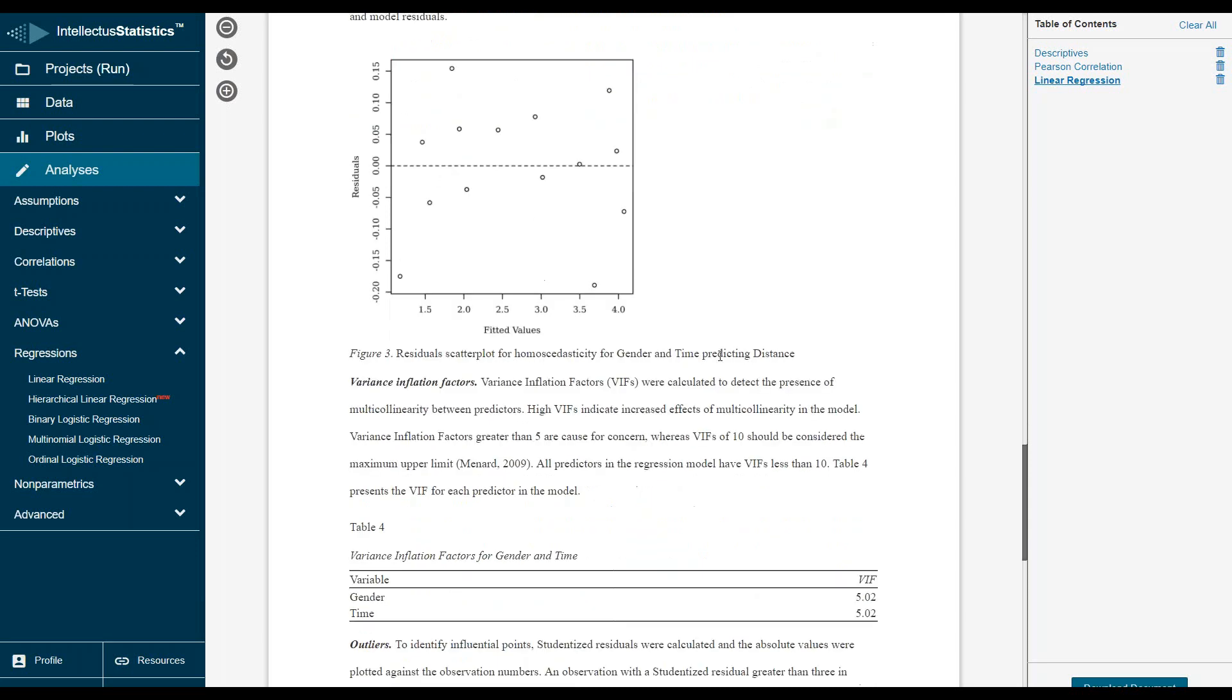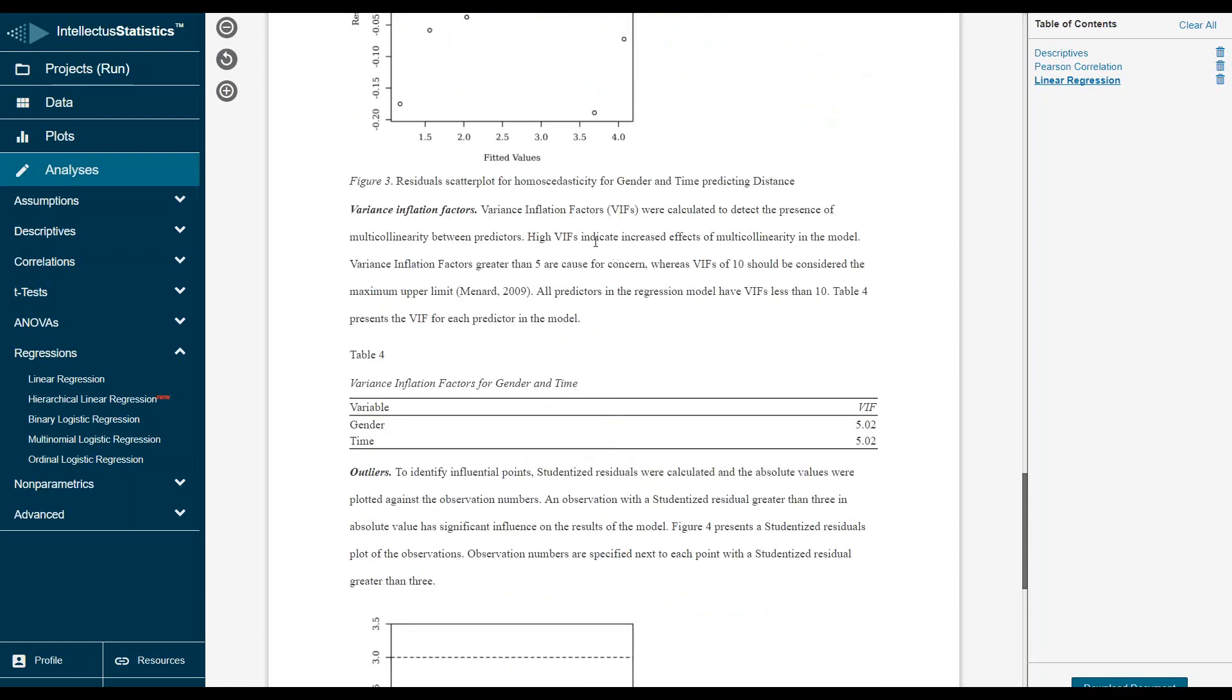The third assumption is that these two variables are not highly correlated. If you have a score between five and ten it may be a concern. So five is a concern, ten should be considered the upper limit. I'd say we're close to five, let it be.